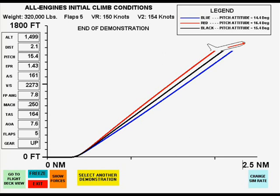FAR Part 25 requires the same VR must be used for both engine out and all engines takeoff performance requirements. Since the climb pitch attitude must be higher for the all engines case, the initial climb airspeed will be greater than V-2, because rotating to a higher pitch attitude takes longer while the acceleration with all engines is greater. Therefore, the all engines initial climb speed is always equal to V-2 plus an additional speed increment. In this case, the correct initial climb speed of 161 knots is equal to V-2 plus 7 knots.